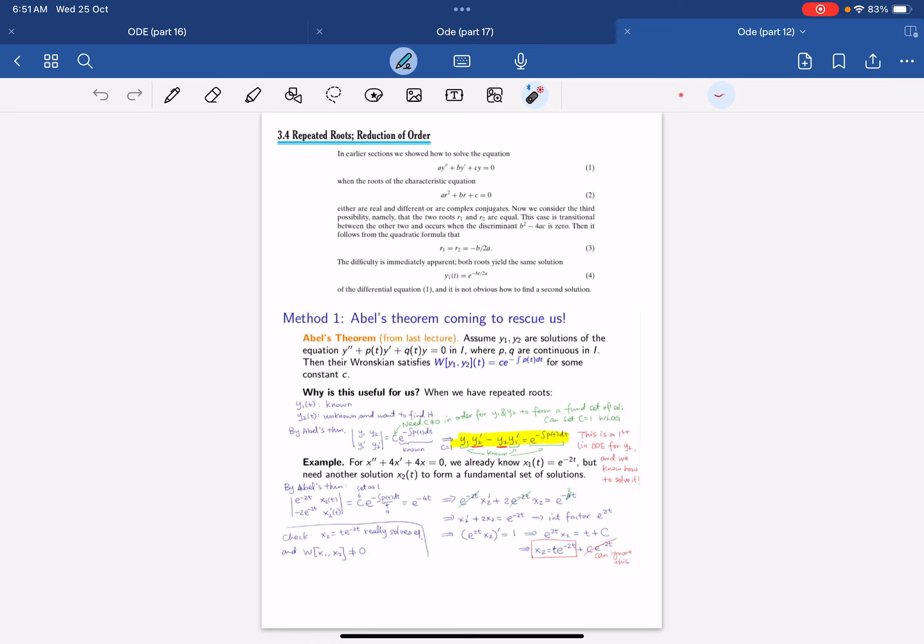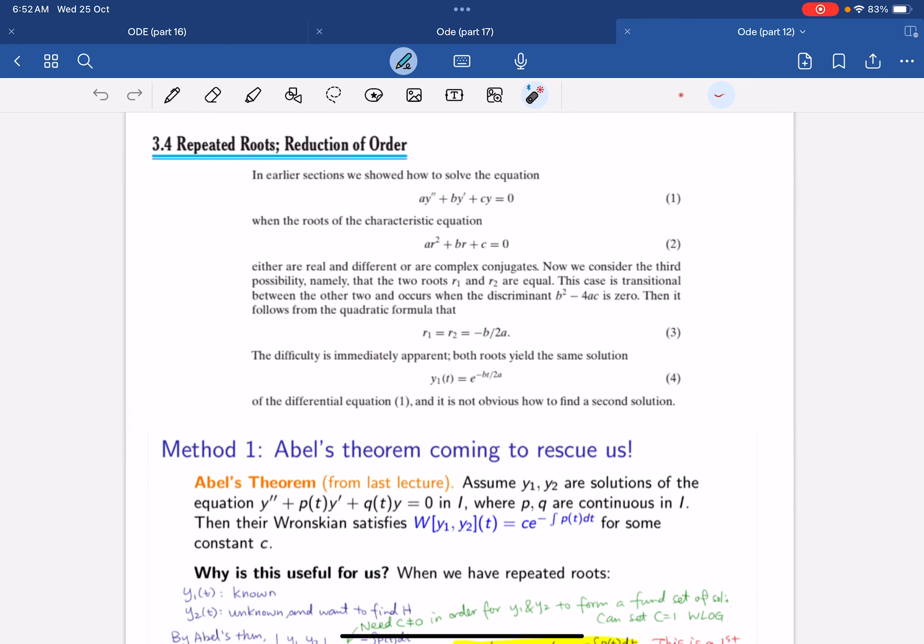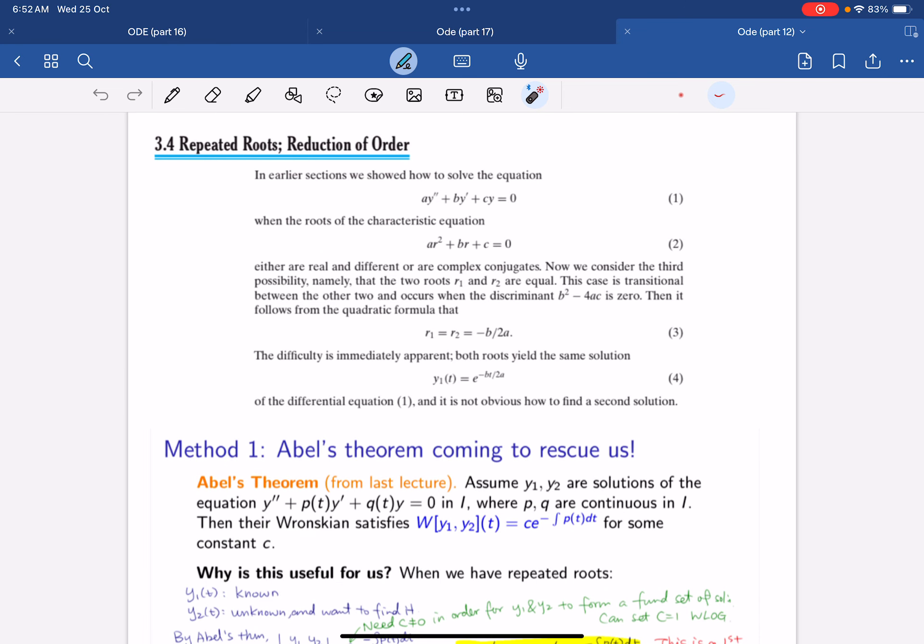In this video we will look at what happens when our characteristic equation has real but equal roots. We already talked about the distinct case, real and complex, but now we have the last case which is the repeated roots. The idea is that we cannot have only one solution, we need a second solution.